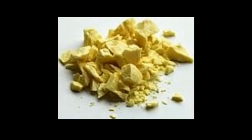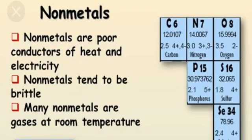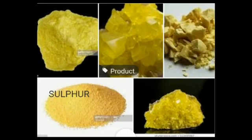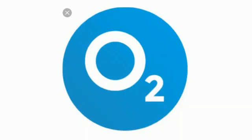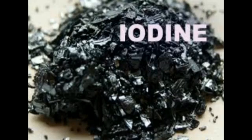Next we have non-metals. Non-metals are either soft solids or gases. They are dull in appearance — that is, they do not possess shine or luster. Non-metals are poor conductors of heat and electricity. They have low melting point and boiling point. Some examples of non-metals are sulfur, oxygen, hydrogen, iodine, and chlorine.